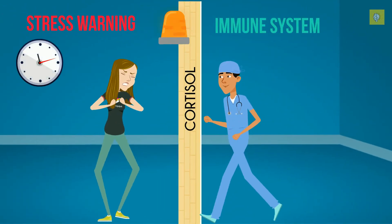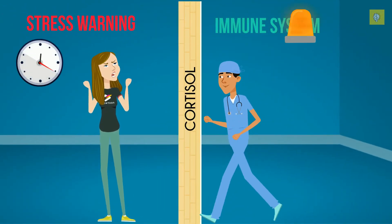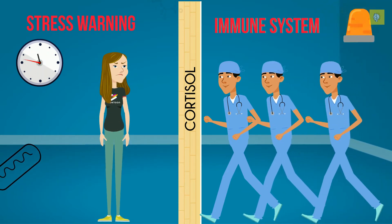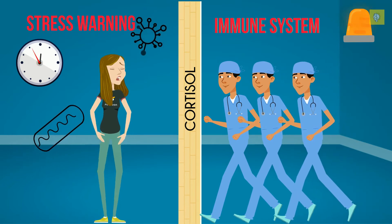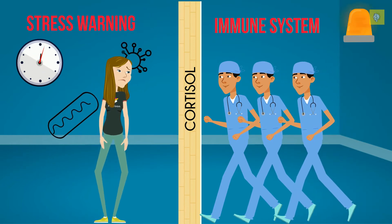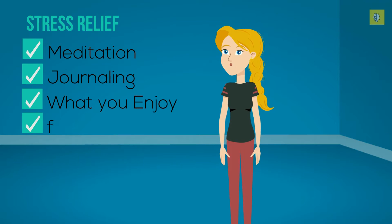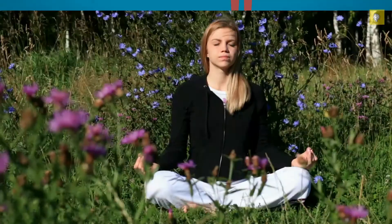But when cortisol levels are constantly high, it essentially blocks the immune system from kicking into gear and doing its job to protect the body against potential threats from germs like viruses and bacteria. For stress relief, meditation, journaling and any activity that you enjoy such as fishing, playing golf or drawing can help.